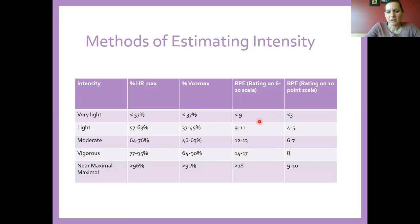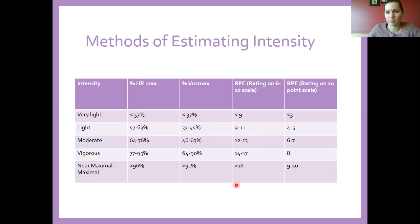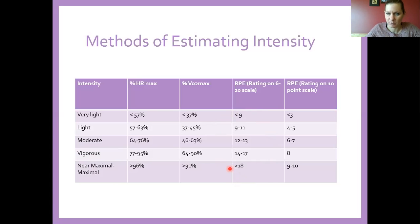The original RPE scale was based on a six-to-twenty point system, where six was the lowest and twenty was the highest. It was set up that way because it allows an easy calculation to determine what heart rate corresponds to that rating. For example, if you feel like you're at a six, multiply by ten — that gives you 60 beats per minute. If you're working as hard as possible at a twenty, that gives us 200, which approximates max heart rate. However, for clients, a one-to-ten scale is a little easier to understand.